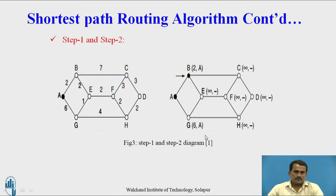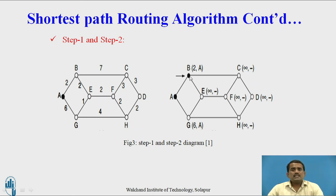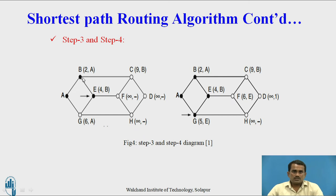Here we have to use some steps. In step 1, we send the data from A to B. Here 2A is shown in brackets — 2 is the distance from A to B, and A indicates we received the data from A. In the next step, data is sent from B to E — shown as 4B in brackets. A to B is distance 2, and B to E is distance 2, so 2 plus 2 is 4. B indicates we received the data from B.